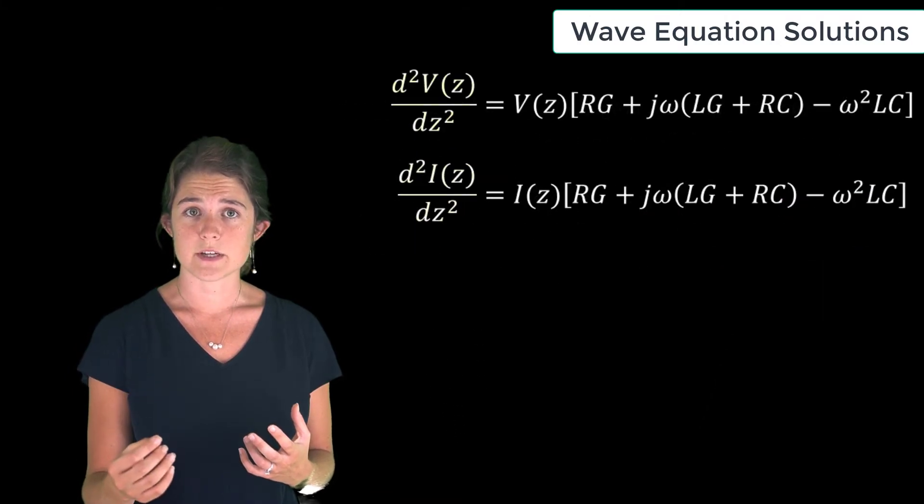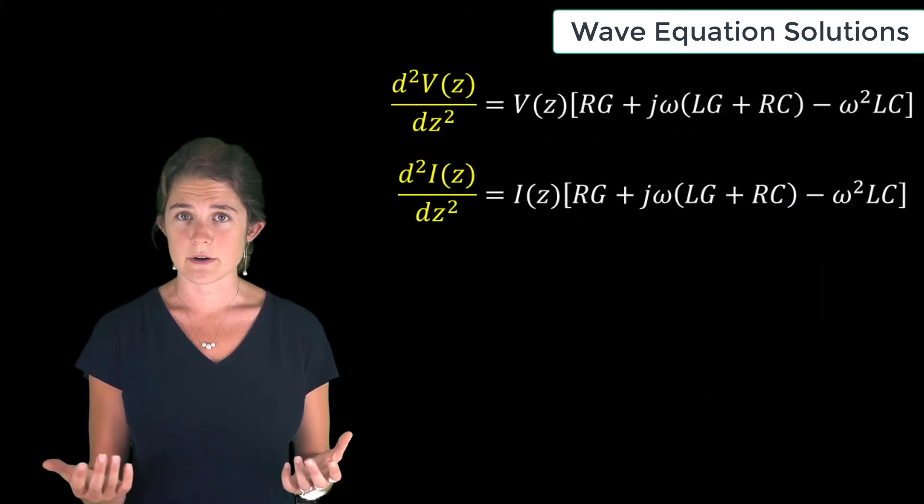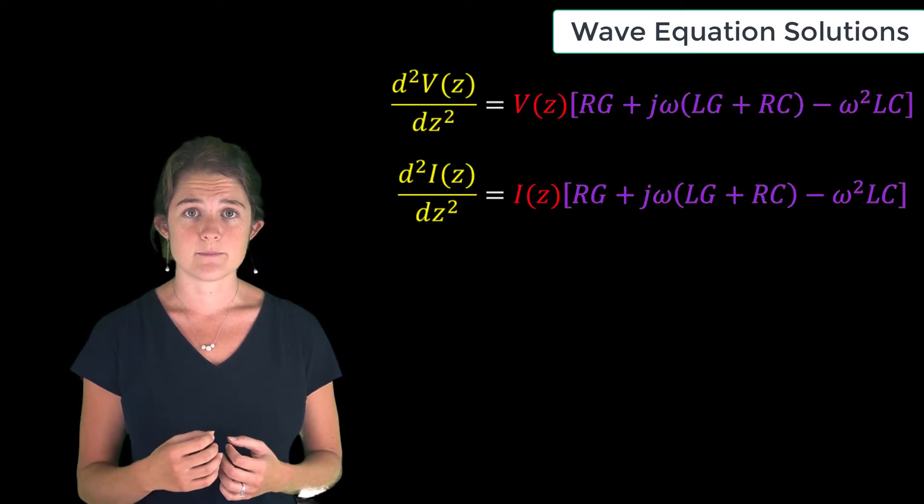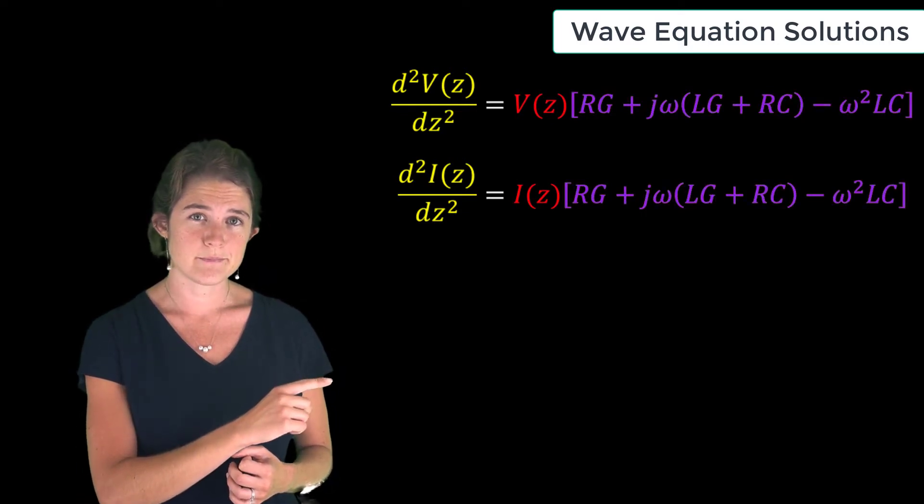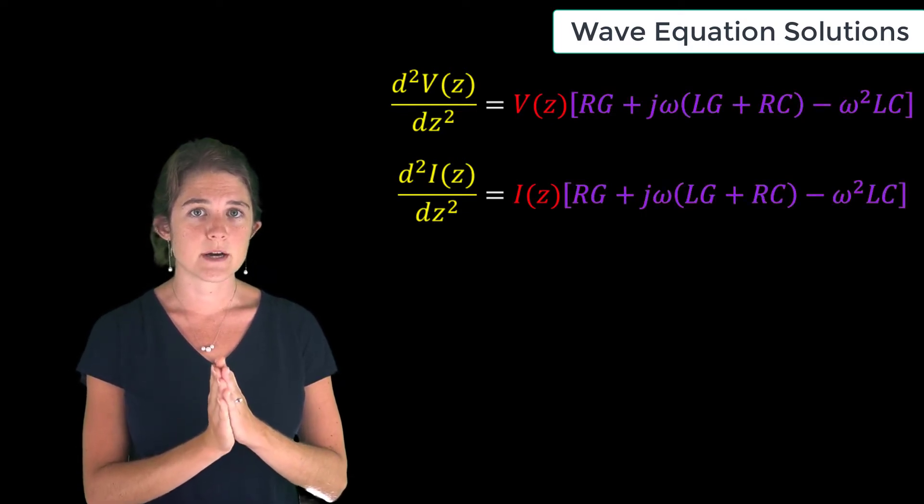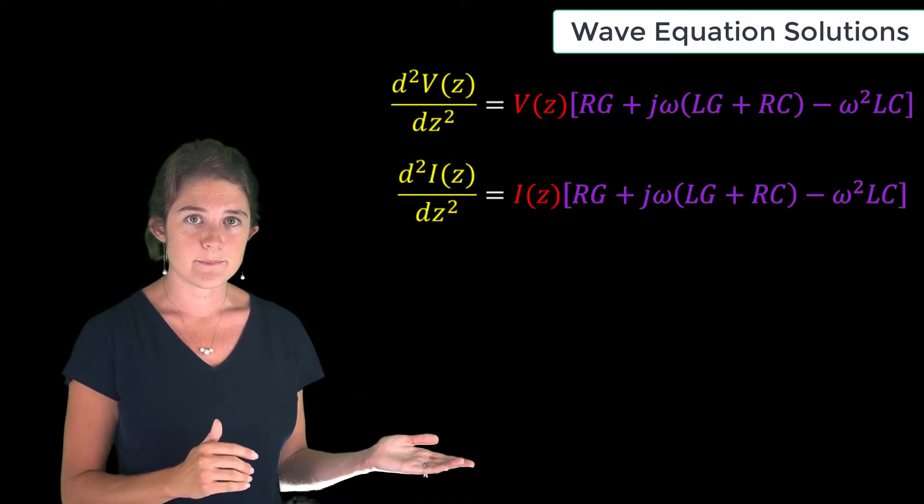second spatial derivative of each quantity, whether voltage or current, is equal to the quantity times a constant, which is this whole term. To make our solution as simple as possible, we'll give this term a name—we'll call it